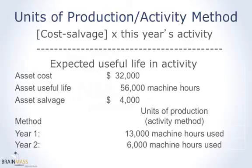In the first two years we used 13,000 machine hours and then 6,000 machine hours. Unlike straight-line and double declining balance or sum-of-the-years' digits, where we can plan out the full life of depreciation when we buy the asset, with this method we must wait and see how much activity is used in each year before we can calculate the depreciation expense.